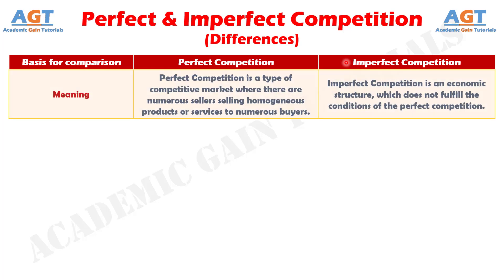Difference number one: perfect competition is a type of competitive market where there are numerous sellers selling homogeneous products or services to numerous buyers, whereas imperfect competition is an economic structure which does not fulfill the conditions of perfect competition.